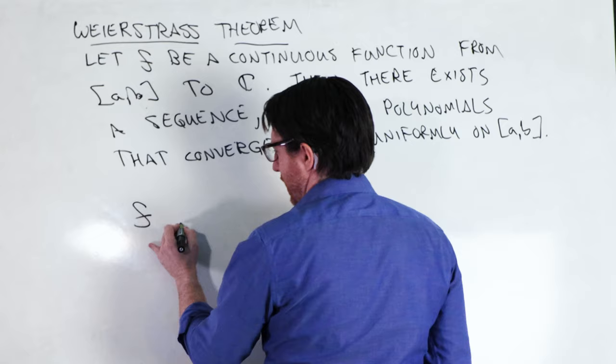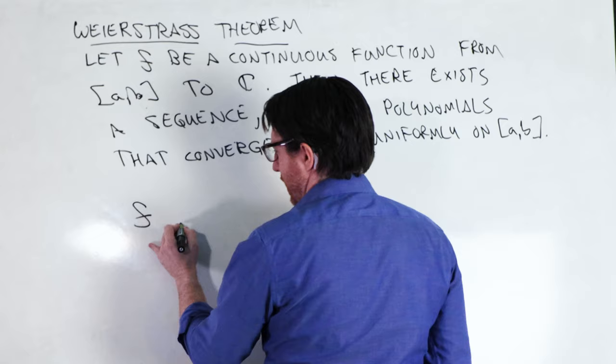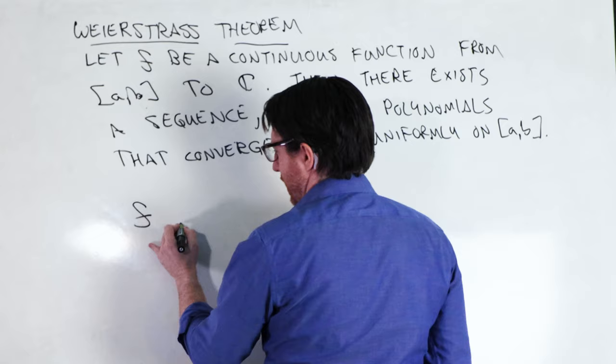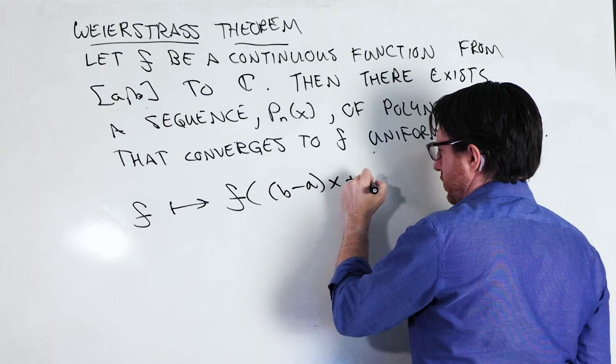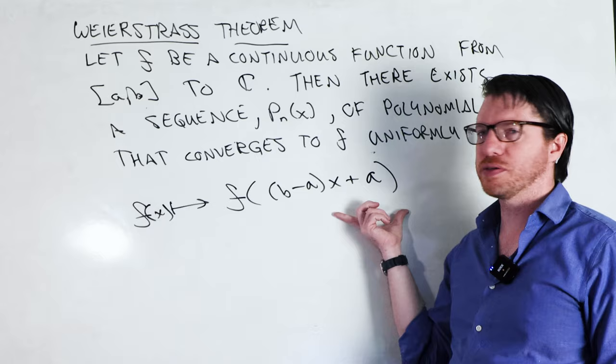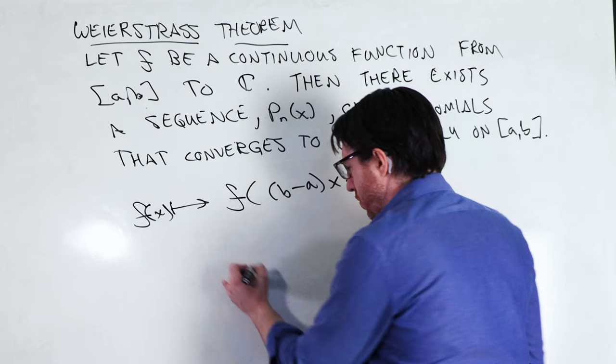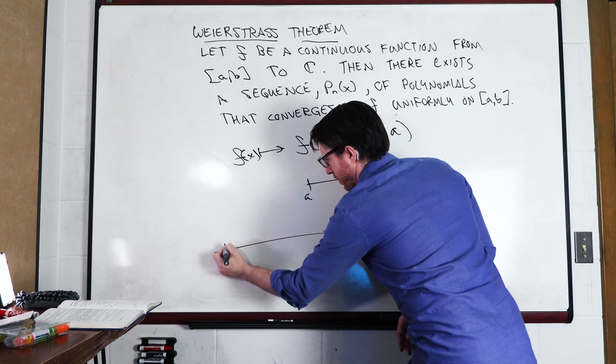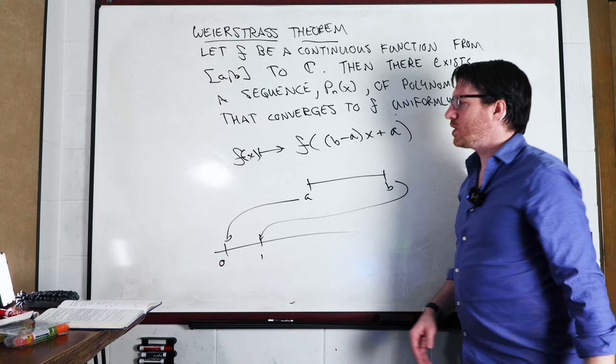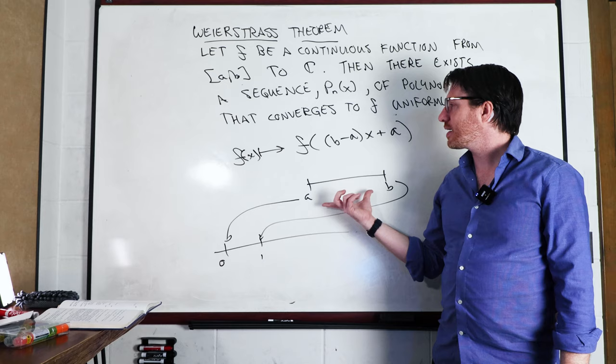We're going to map f to f of (b minus a)x plus a, giving us a rescaling and shifting of our function — from a function on [a, b] to a function on [0, 1]. Once we get an approximation over [0, 1], we can just undo this and shift it back and rescale it.